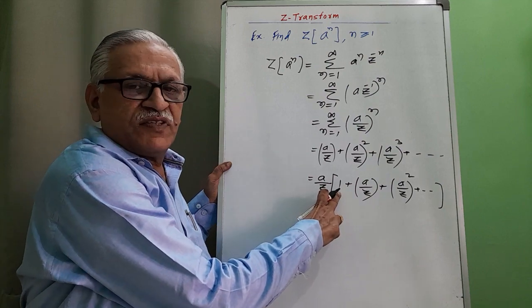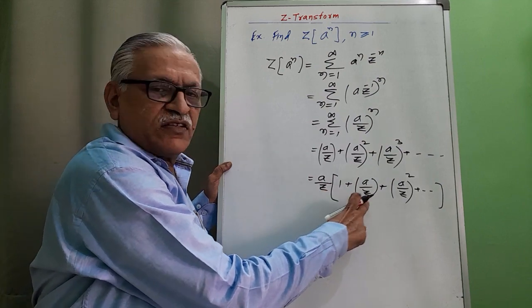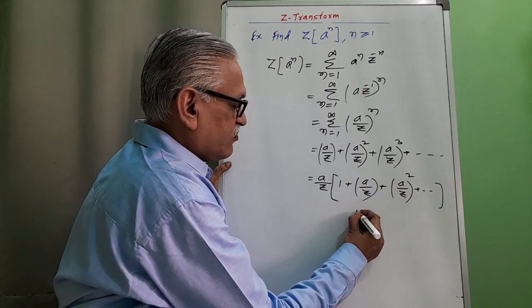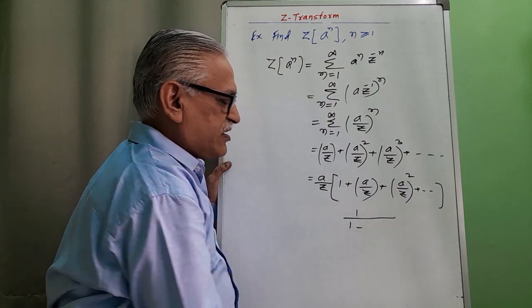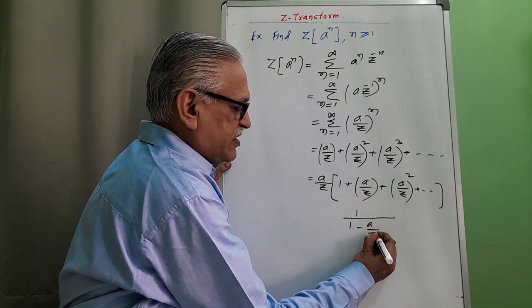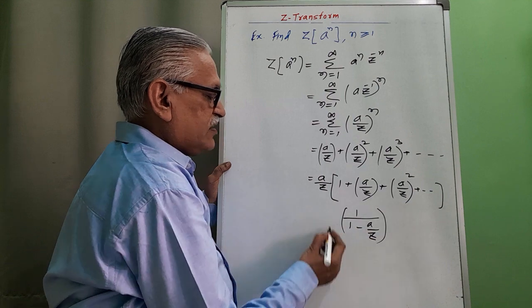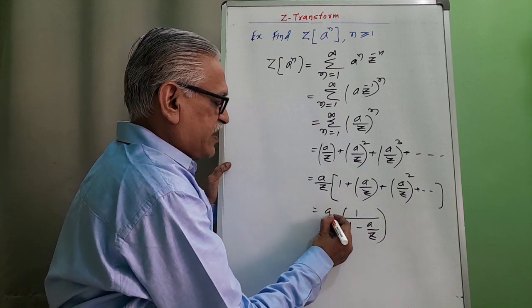Sum of this term 1 plus capital X plus capital X square and so on is 1 upon 1 minus capital X. That capital X is here A by Z, into this outer A by Z as it is.